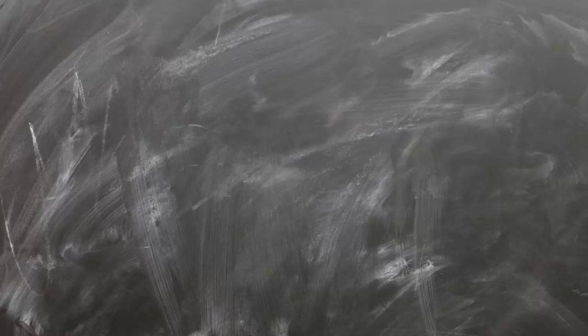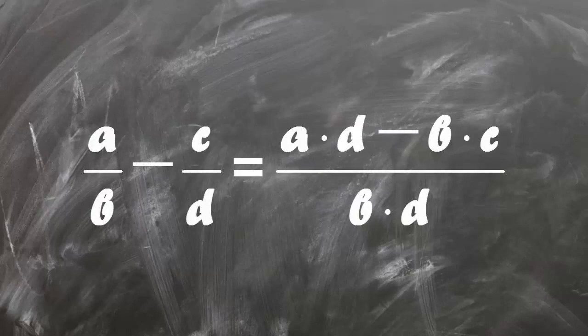In case of subtraction you repeat the same procedure but at the end you will get A times D minus B times C over B times D. Now let's go to solve some problems.